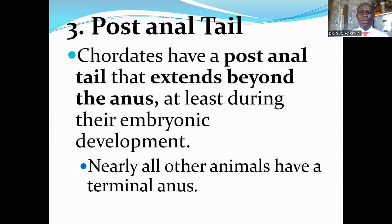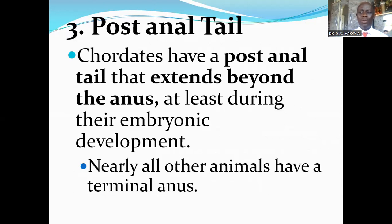The third feature of chordates is the post-anal tail. Chordates have a post-anal tail that extends beyond the anus — post-anal means beyond the anus. This post-anal tail is found virtually in all chordates, especially during embryonic development. But as adults, some chordates actually lose this feature. The tail is usually later absorbed. But clearly in humans the tail is lost, and it remains as the tailbone or the coccyx. But virtually every other chordate has a post-anal tail, though the amphibians too.